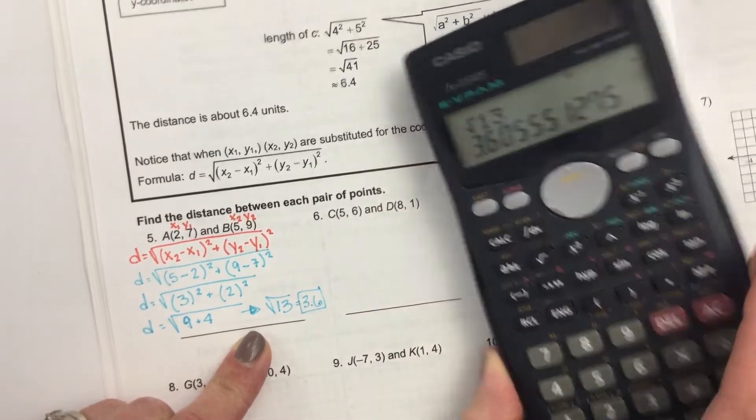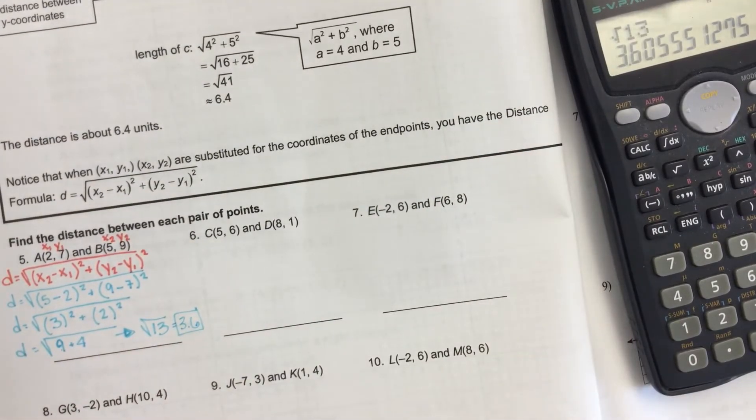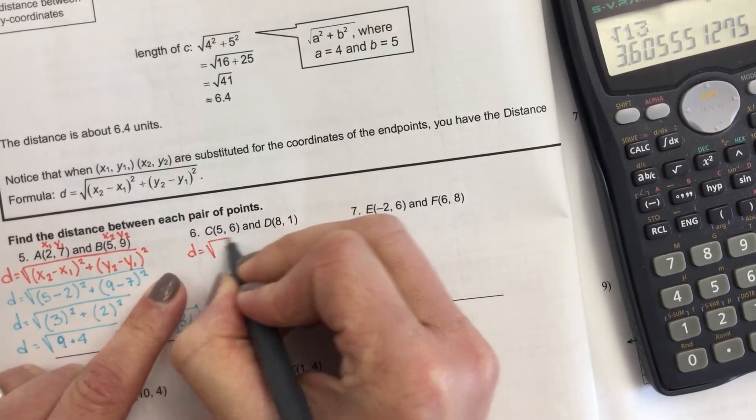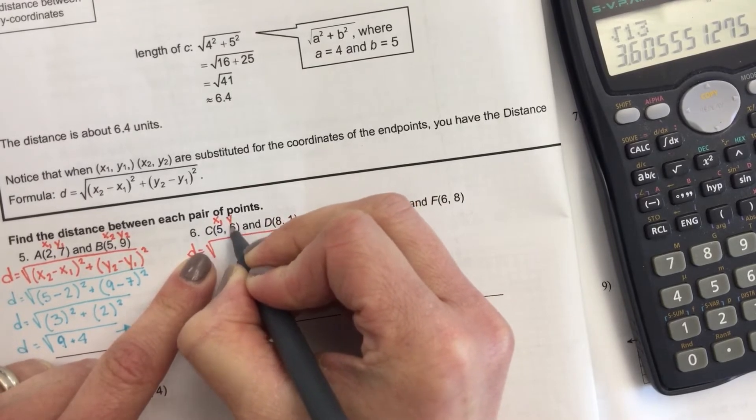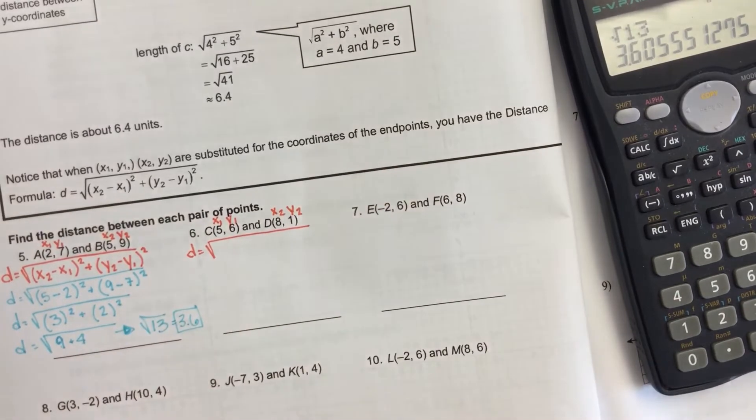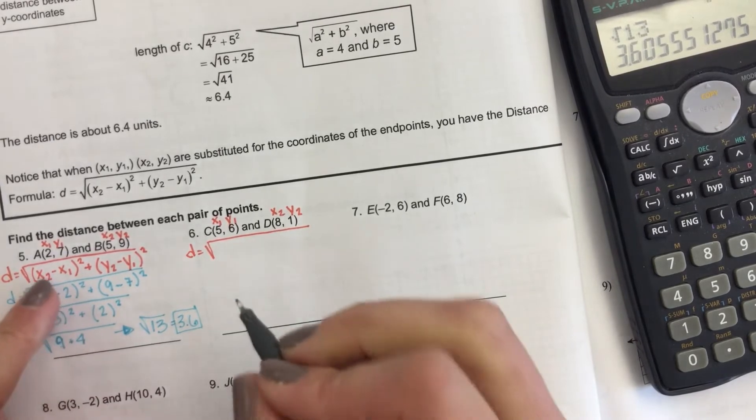Okay. And then we're going to go to our next one. Same thing, just different coordinates. x1, y1, x2, y2. And I don't care if you rewrite the formula every time. Just follow it.